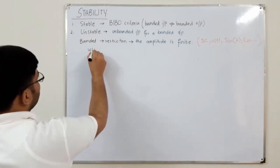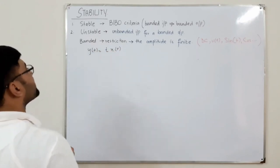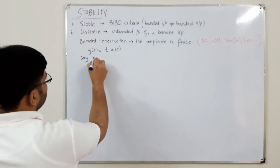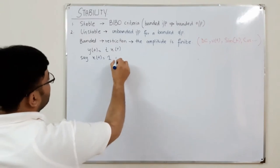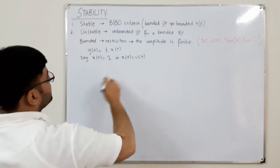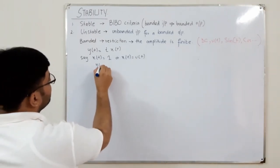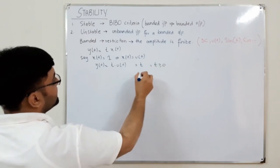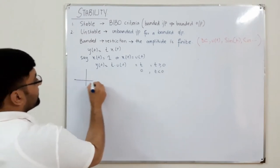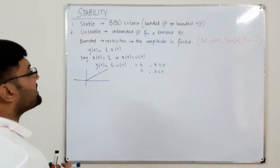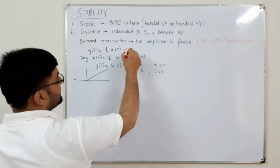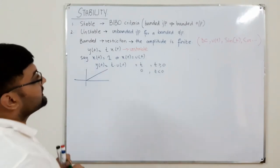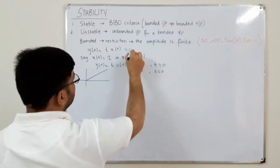The book has the example y(t) = t·x(t), where t is our coefficient and x(t) is our input. If we take x(t) = u(t), the unit step function, then y(t) = t·u(t), which equals t for time greater than or equal to 0, and 0 for time less than 0. This function is constantly increasing in magnitude — it is an unbounded signal — so this is an unstable system.